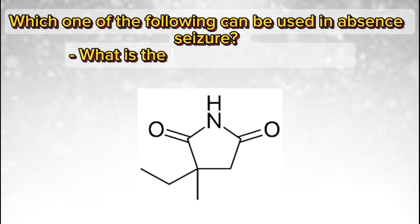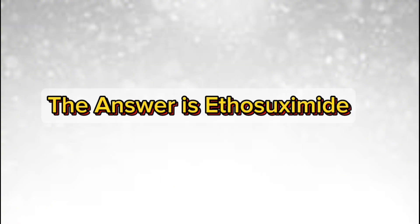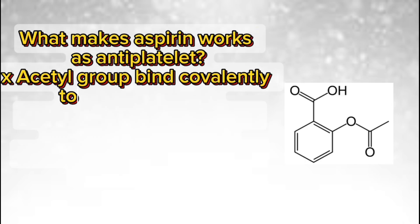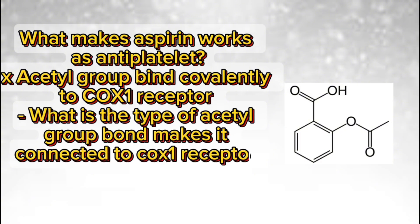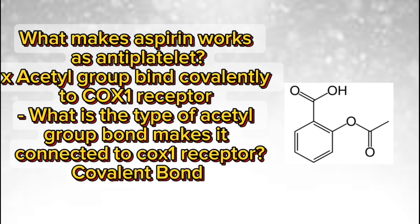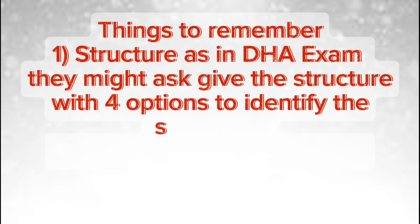Which one of the following can be used in absence seizure? The answer is ethosuximide. What makes aspirin work as an antiplatelet? The acetyl group binds covalently to the COX-1 receptor — the bond type is a covalent bond. Things to remember: in the DHA exam they might give the structure with four options to identify it, so take your time and revise structures properly.